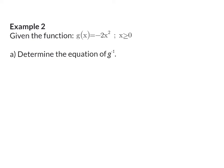Example 2. Given the function g(x) equals minus 2x squared with x bigger or equal to 0, first question: determine the equation of the inverse of g. So once again, we know that if we need to determine the inverse, we start off by swapping around x and y in the equation.